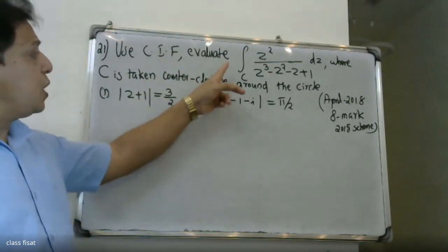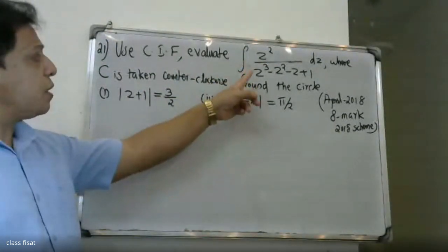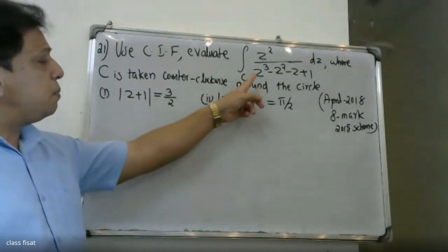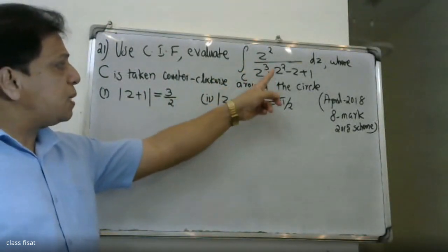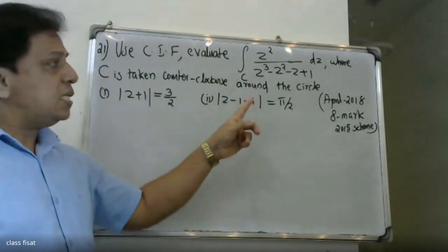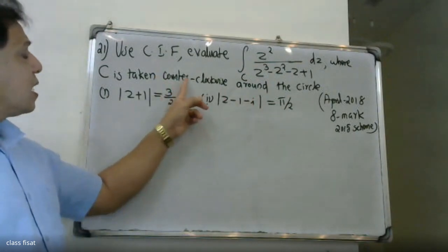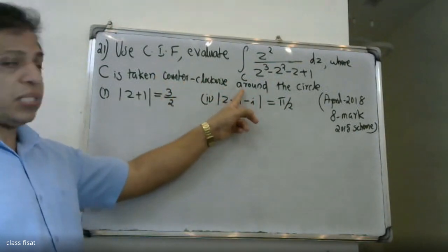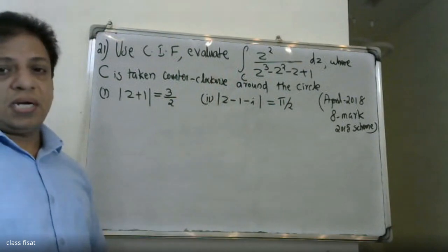We want to evaluate the integral over C of z squared divided by z cubed minus z squared minus z plus 1, dz, where C is taken counterclockwise around the circuit.